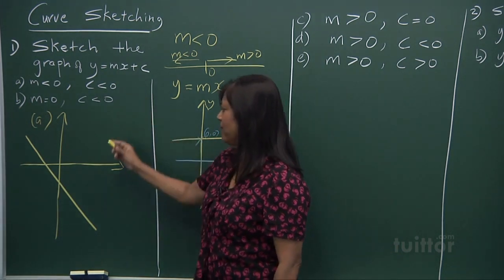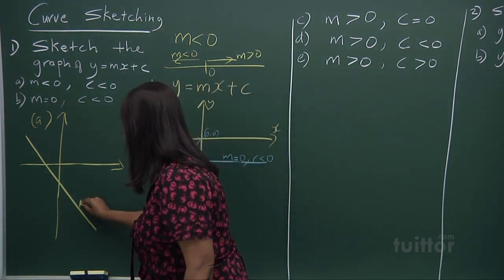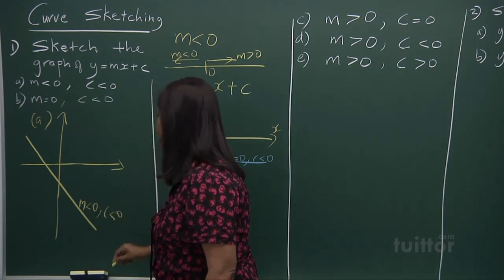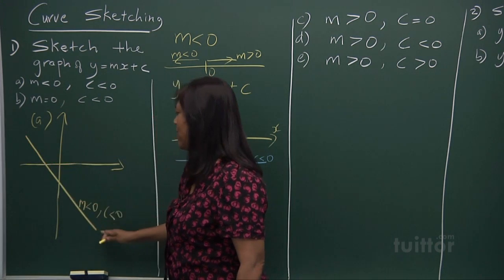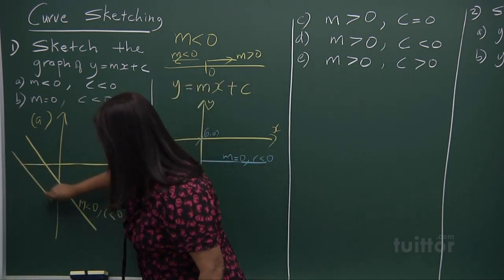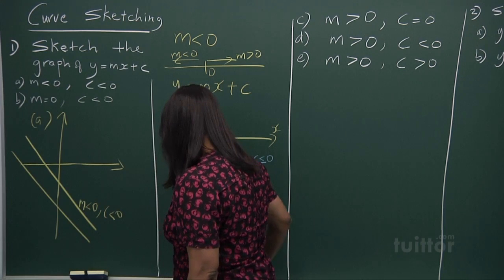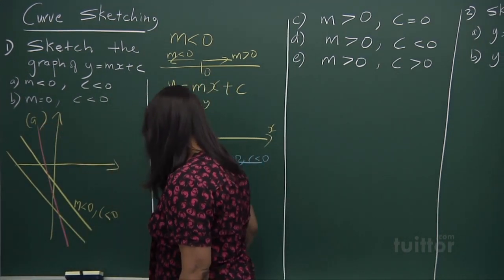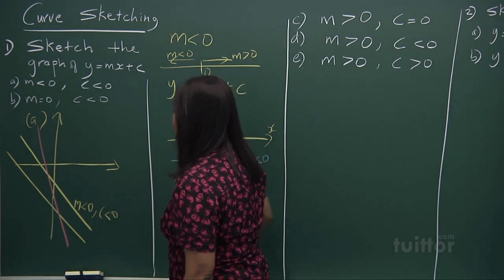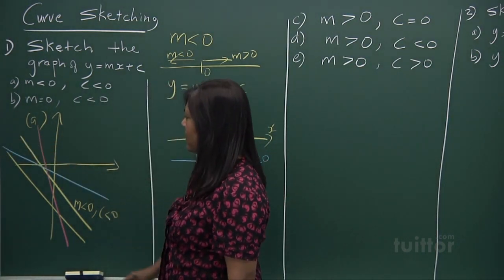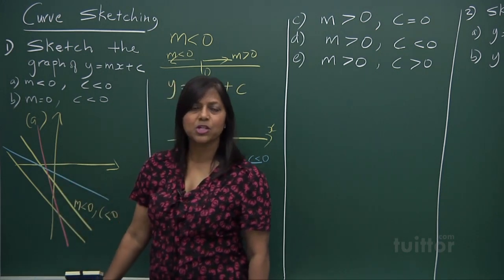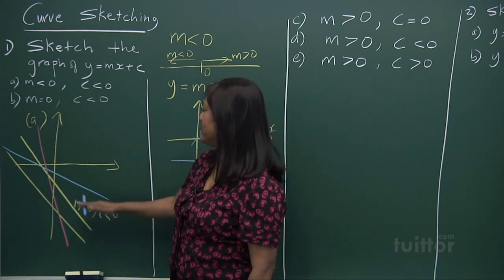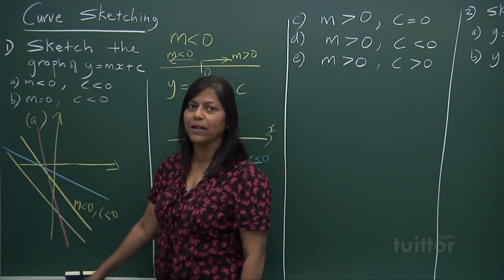To reiterate the earlier graph: where m is less than 0 and c is less than 0, it can be any one of these graphs showing a downward slope. All of these graphs show that the gradient is negative — it's a downward slope — and the c is below the line.